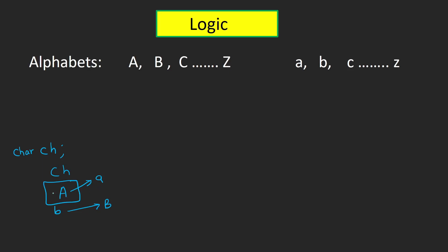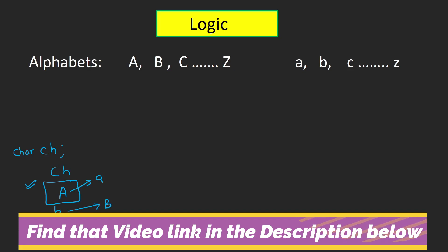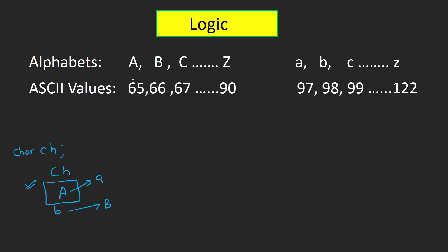The question is: how do we detect whether the character in 'ch' is uppercase or lowercase? You know that every character in C has an ASCII value — an integer value associated with it. Capital 'A' has ASCII value 65, capital 'B' has 66, and so on. Likewise, small 'a' has ASCII value 97 and so on. The C compiler uses these ASCII values internally to distinguish between uppercase and lowercase forms.